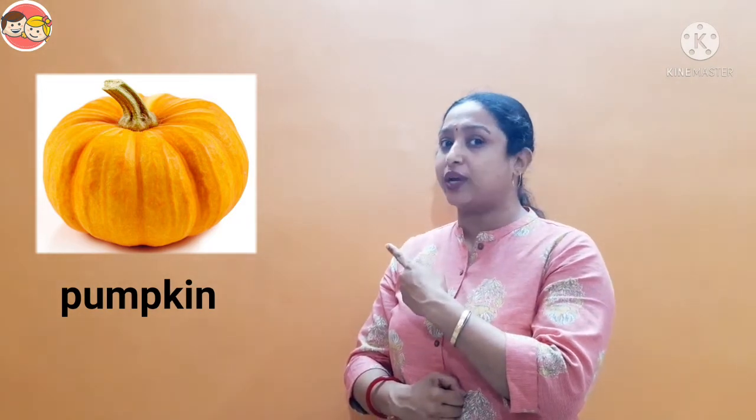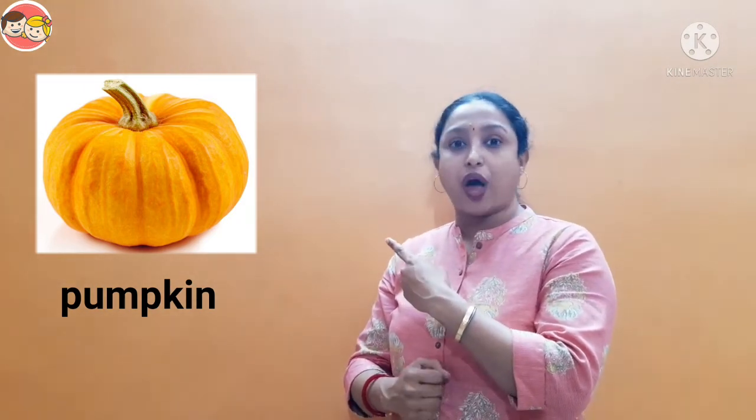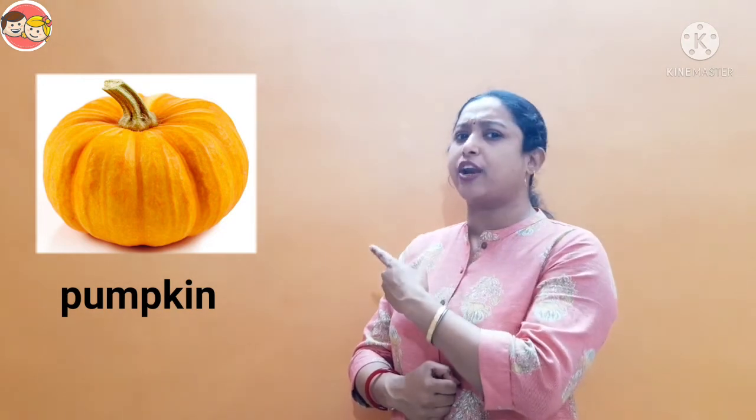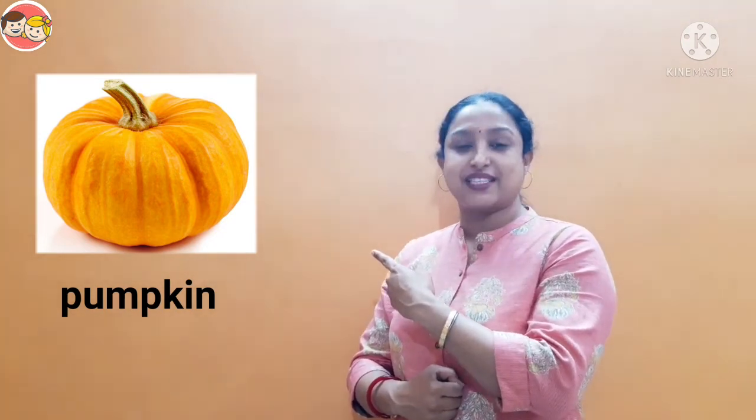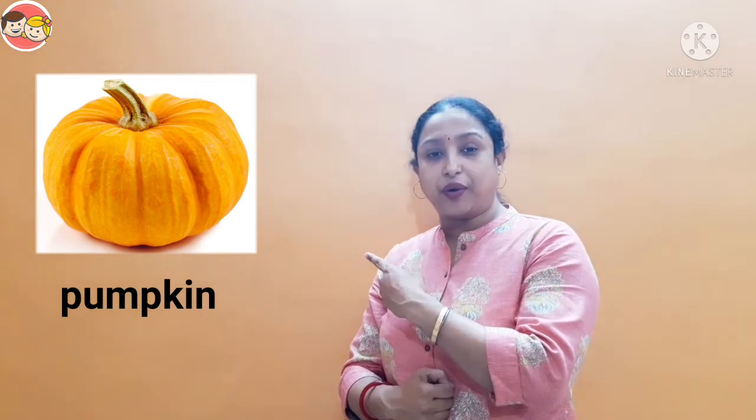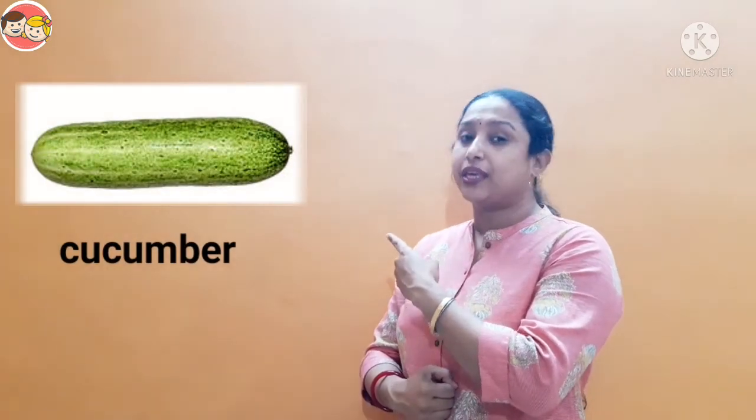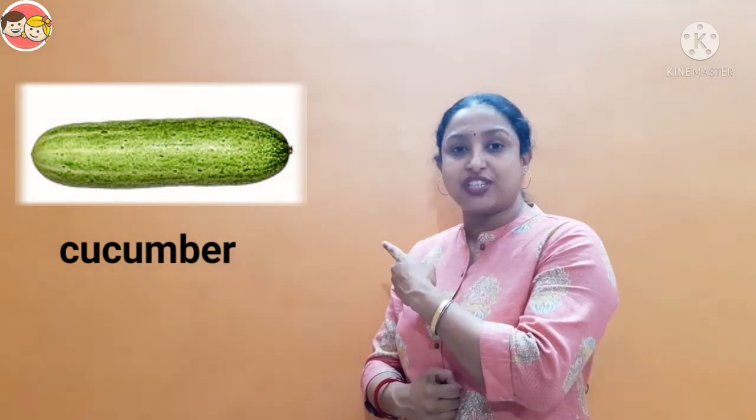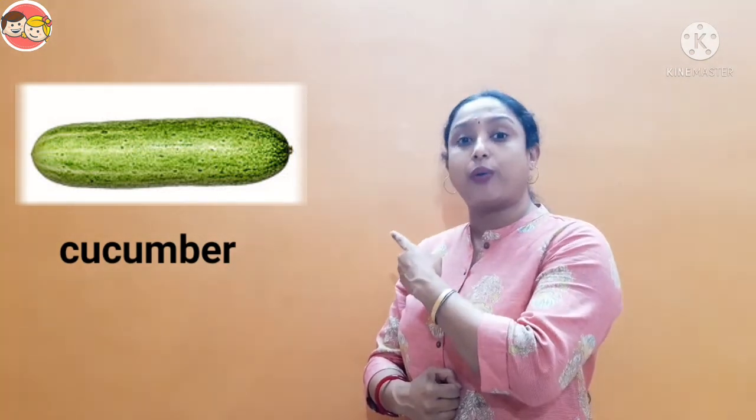Next, pumpkin — peter peter pumpkin eater! Pumpkin also belongs to the gourd family. Pumpkin has hard skin and it is usually big and round in shape. Pumpkin is orange in color. Next, cucumber — cucumber is also a gourd family vegetable and it is green in color. So today we have learned about gourd family vegetables — everyone repeat: cucumber, pumpkin, bottle gourd, bitter gourd — these are all gourd family vegetables.